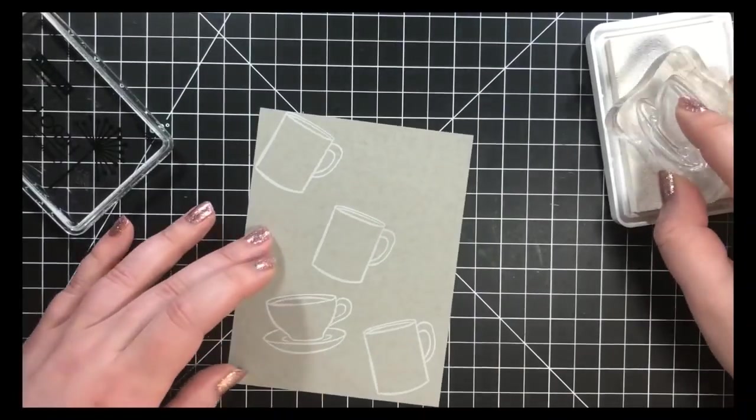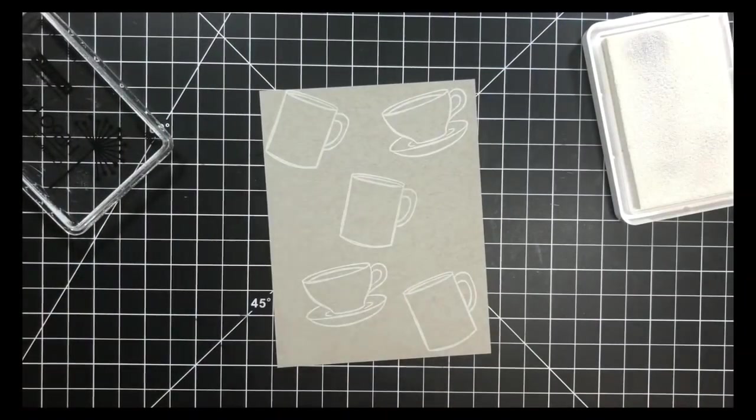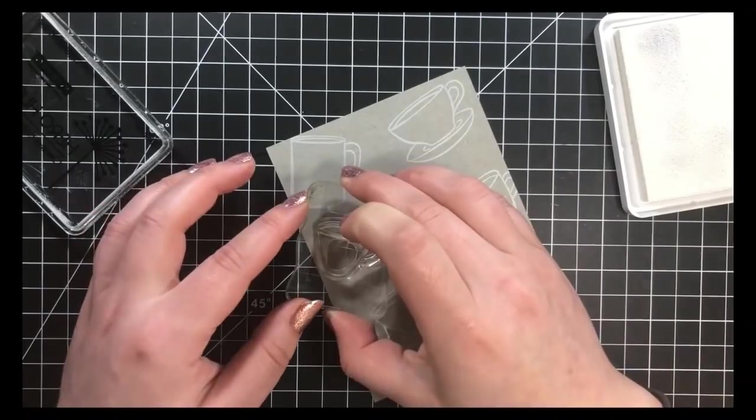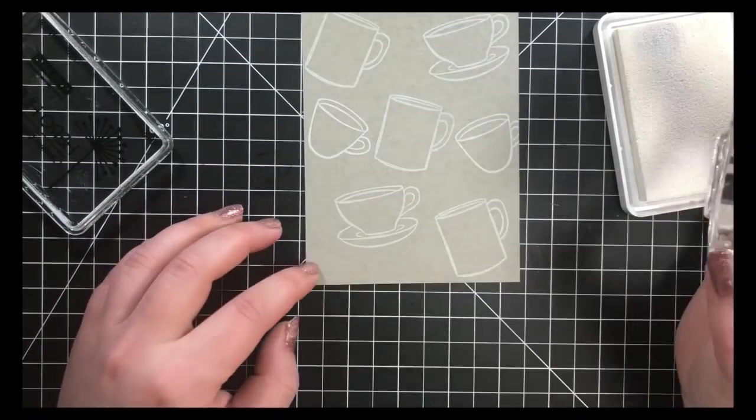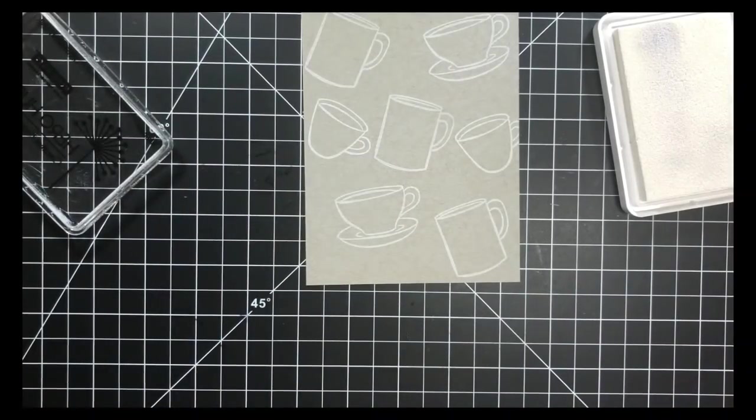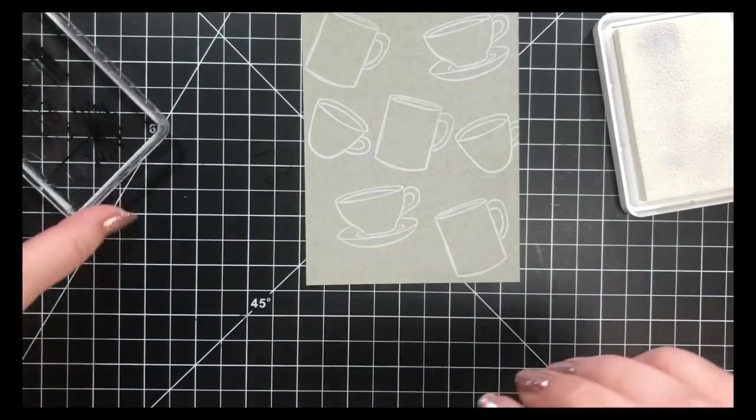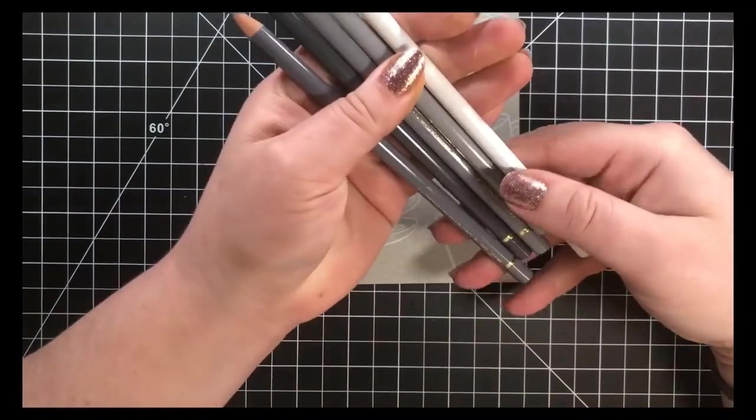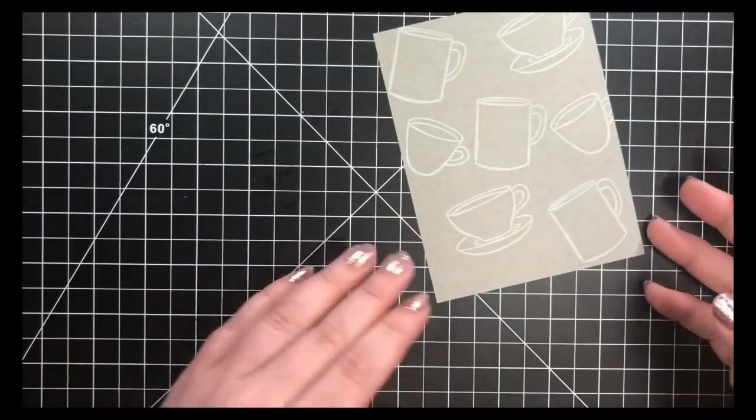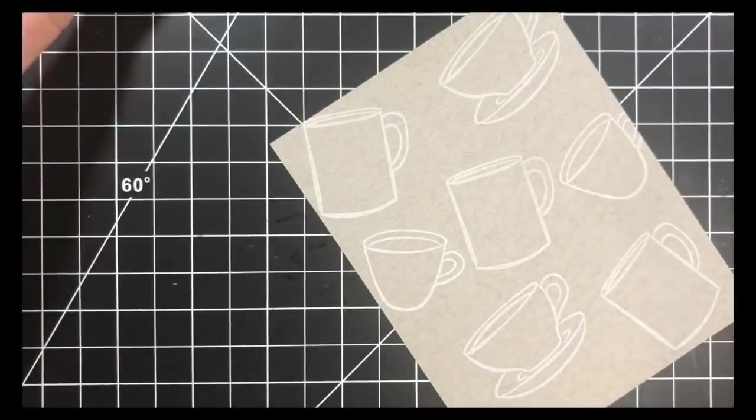I'm going to be using polychromos colored pencils here. I'll warn you now, I'm very new at these. I've been practicing a little bit, but I'm by no means an expert, so we're going to keep the coloring pretty simple. I'll be using a variety of gray pencils and two brown pencils for the coffee inside the little cups, as well as the white pencil. I will just be showing you two of the mugs here. I'm not going to make you sit here and watch me color all of them.